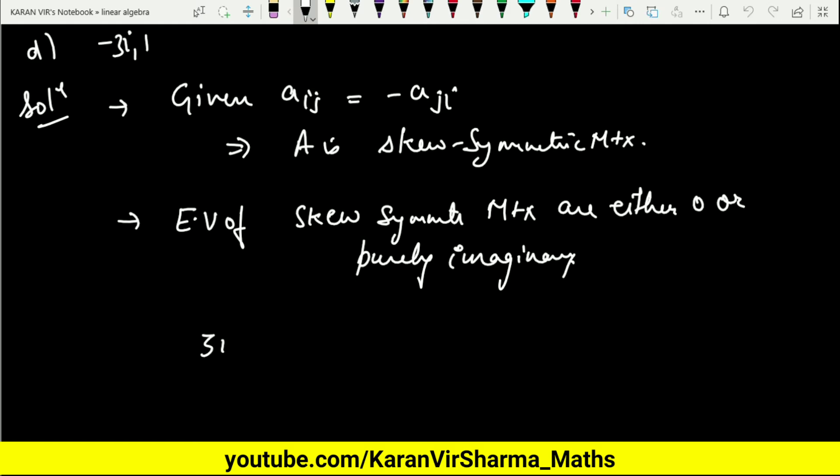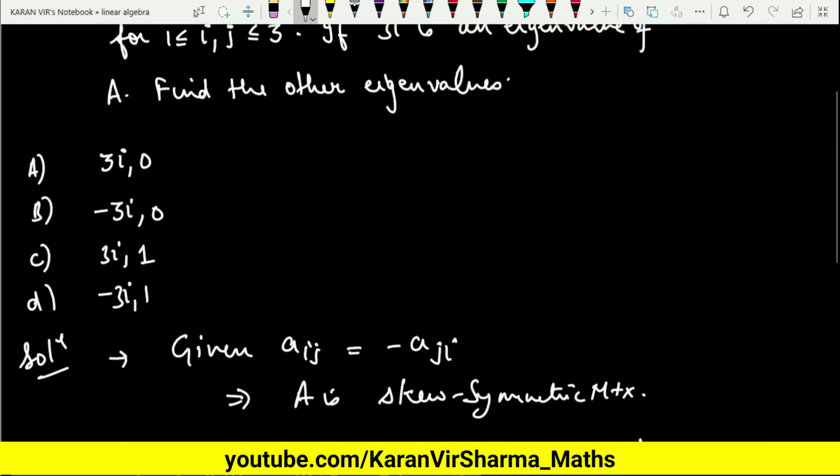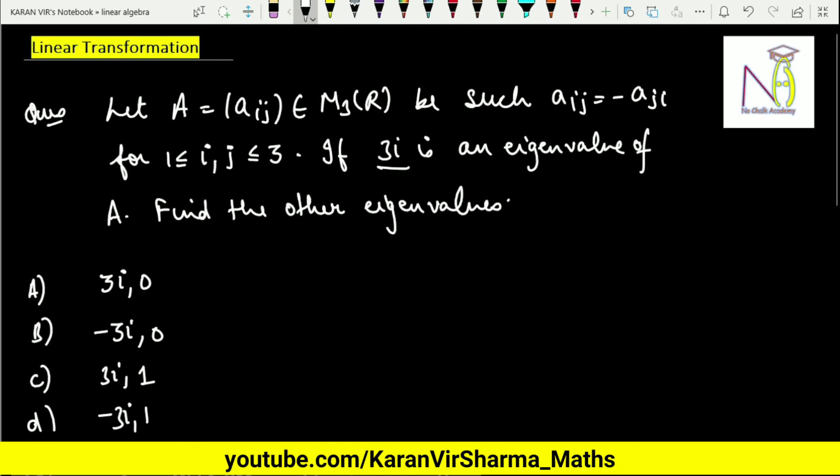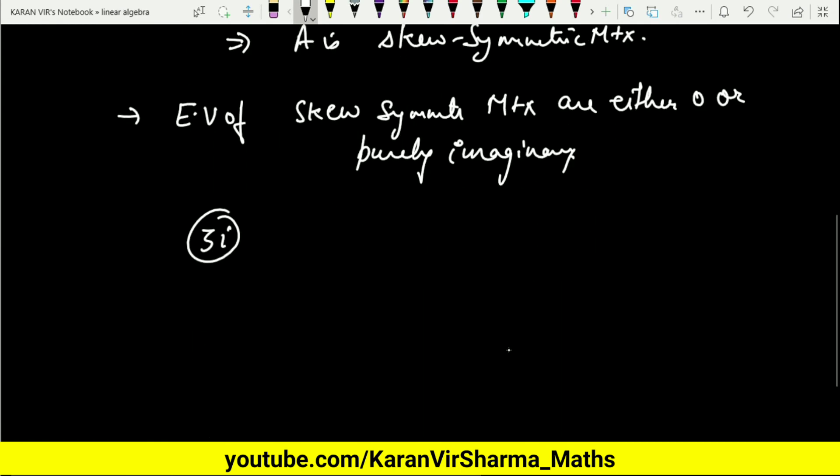So if 3i is an eigenvalue, this implies minus 3i will also be an eigenvalue, because 3i is purely imaginary. Complex eigenvalues always occur in pairs. So next is 3i and minus 3i.